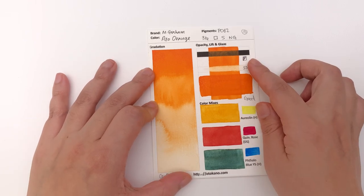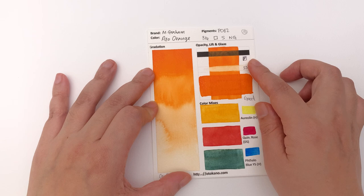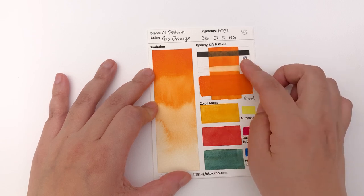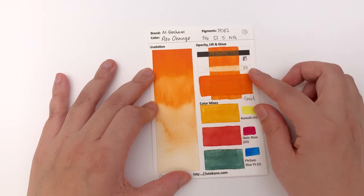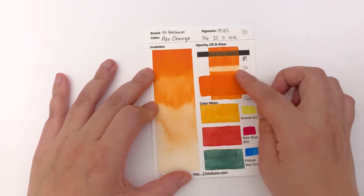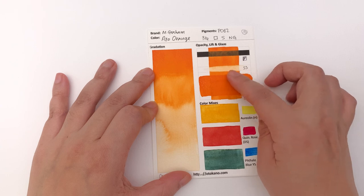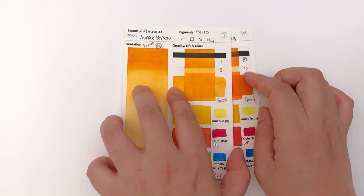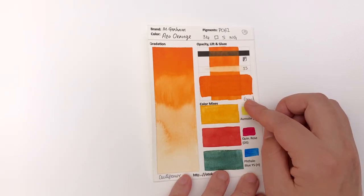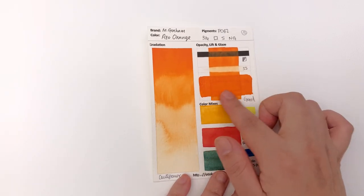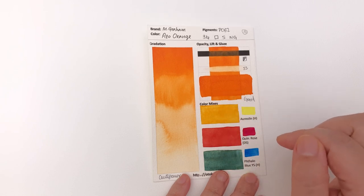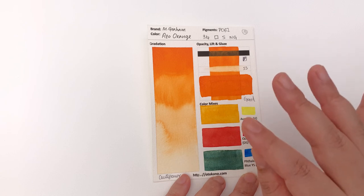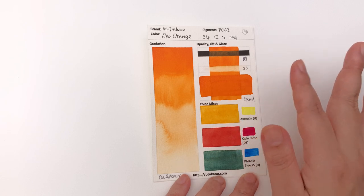It is classified as transparent and I would say that this is at least semi opaque. There's a lot of deposit here. It's classified as staining and I would say just semi staining. It's not as bad as say the Indian yellow. It is a good glazer but you get a little bit of streakiness coming in in the mass stone so you might want to avoid doing glazes in the mass stone and do it in much more watered down versions.